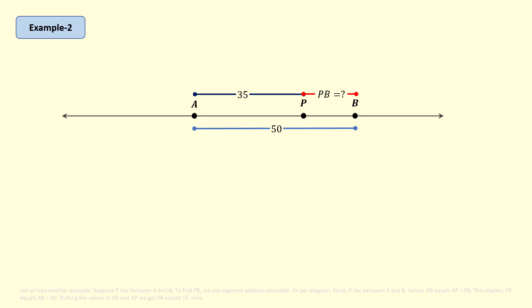As per the diagram, since P lies between A and B, hence AB equals AP plus PB. This implies PB equals AB minus AP.